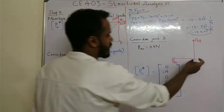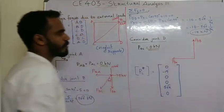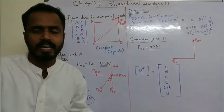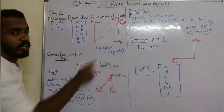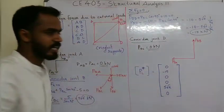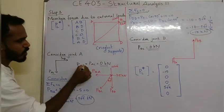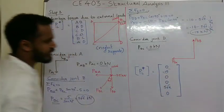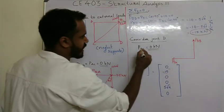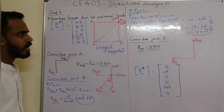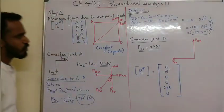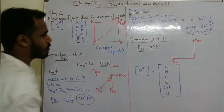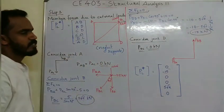PBC is equal to minus 15 kilonewton. Then consider joint D — PBC equals zero. Going through all member forces: AB equals zero, so BD is equal to 3 minus 15, and for CD we get the constraint. CA is equal to 0. BC is equal to 5 root 2. The last one is AD, which is 0. That completes step 3.